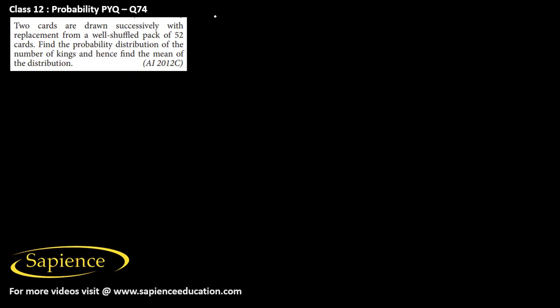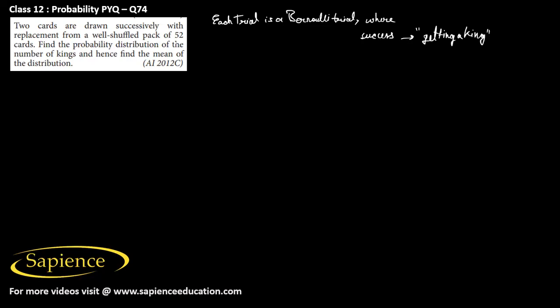Each trial is a Bernoulli trial where success can be defined as getting a king. Since the card is drawn with replacement, the probability of success will be the same in every trial.